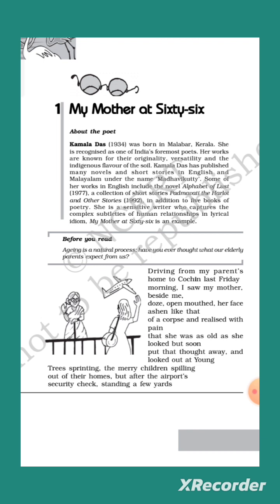The next lines read: 'And realized with pain that she was as old as she looked, but soon put that thought away and looked out at the young trees sprinting, the merry children spilling out of their homes.' The poet was alarmed by the sudden realization that old age had crept upon her mother. To divert her attention from the disturbing thought, she looked outside the car. The young green trees appeared to be running in the opposite direction, and she saw children rushing out to play — a sharp contrast to the old and ill mother sitting beside her.